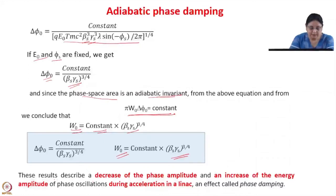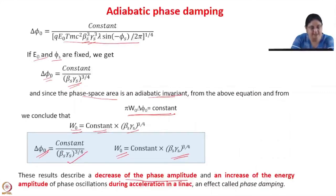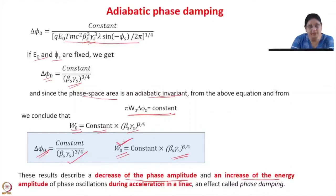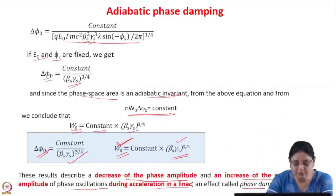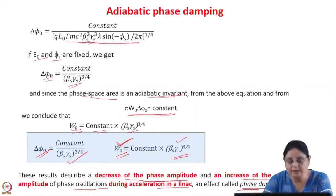If E0 and phi_s are fixed, we get delta_phi_0 equals some constant divided by (beta_s * gamma_s)^(3/4). Since the phase space area is an adiabatic invariant and therefore constant, we can write w0 equals a constant times (beta * gamma)^(3/4). So the phase amplitude delta_phi_0 is inversely proportional to (beta_s * gamma_s)^(3/4), whereas w0 is directly proportional to (beta_s * gamma_s)^(3/4). These results describe a decrease of the phase amplitude.